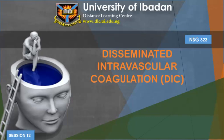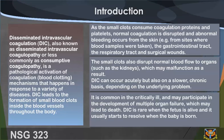Welcome to NSG 323, story session 12: Disseminated Intravascular Coagulation (DIC). DIC, also known as disseminated intravascular coagulopathy, is a pathological activation of coagulation blood clotting mechanisms that happens in response to a variety of diseases. It leads to the formation of small blood clots inside the blood vessels throughout the body. As these small clots consume coagulation proteins and platelets, normal coagulation is disrupted and abnormal bleeding occurs.